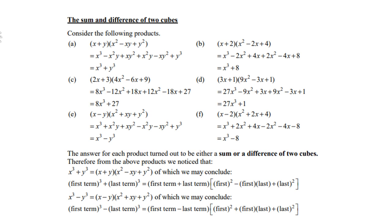In example C, (2x + 3)³ gives 8x³ + 27, where 8x³ is 2x times 2x times 2x, and 27 is 3 times 3 times 3. In example D, the same thing happens: 27x³ is 3x times 3x times 3x, and 1 is 1 times 1 times 1.